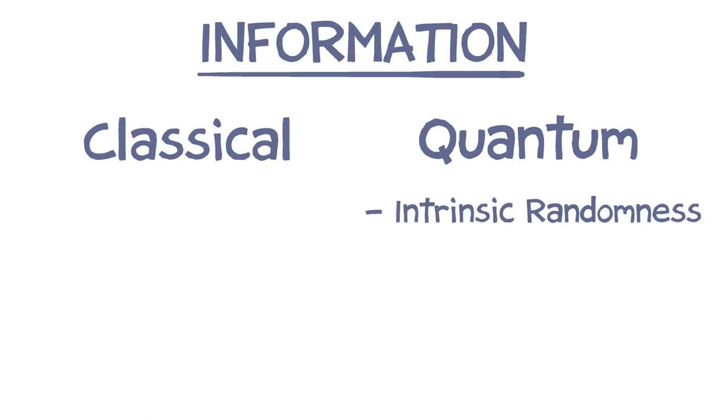So when we think about how quantum information is different from classical information nowadays, we're thinking about this intrinsic randomness, the uncertainty principle, and also about entanglement.